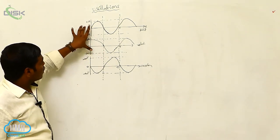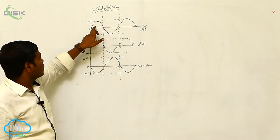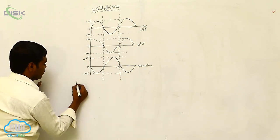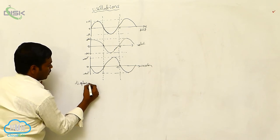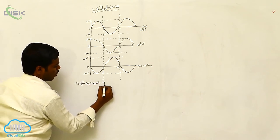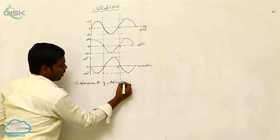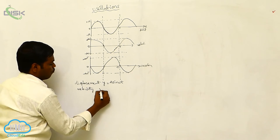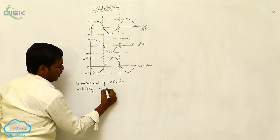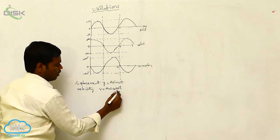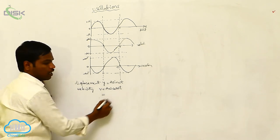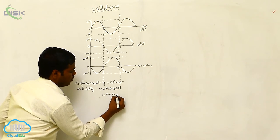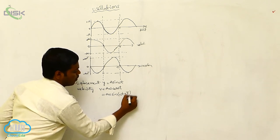If we observe the phase angles of displacement, velocity and acceleration: displacement y is equal to a·sin(omega·t), and velocity v is equal to a·omega·cos(omega·t), which we can write as a·omega·sin(omega·t + pi/2).